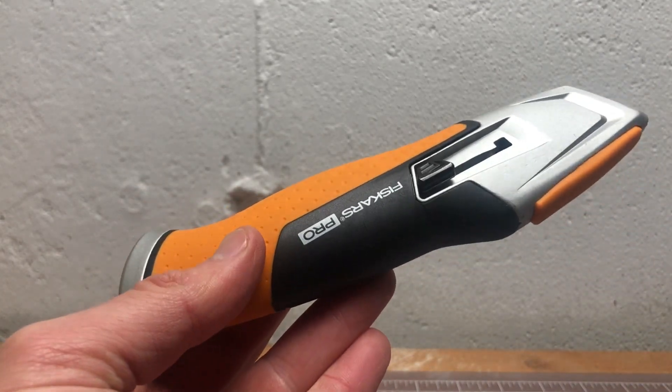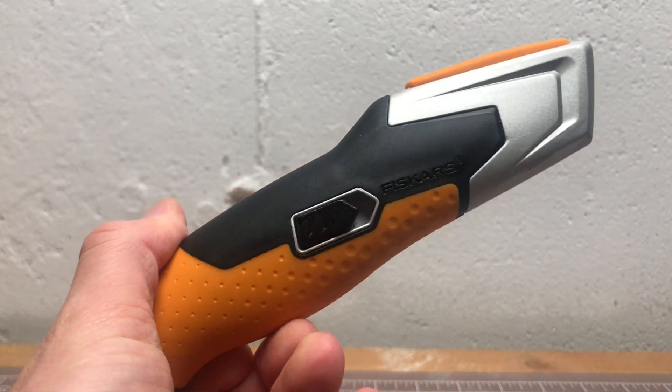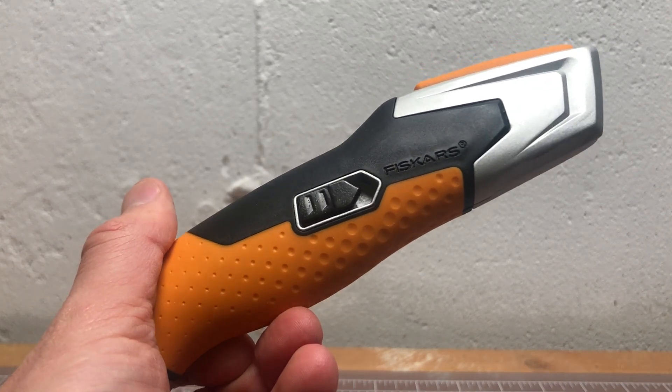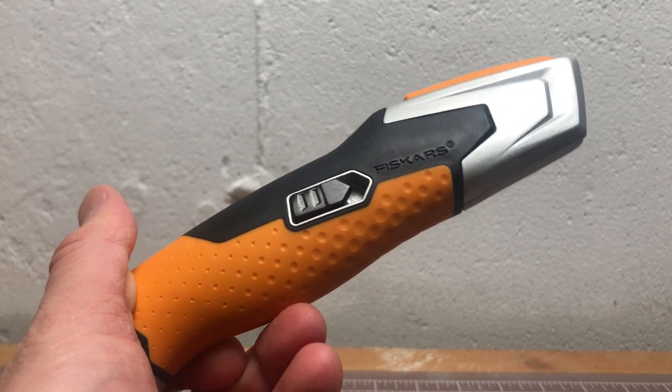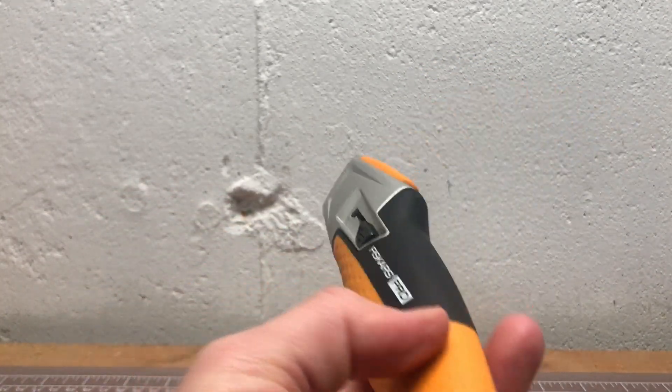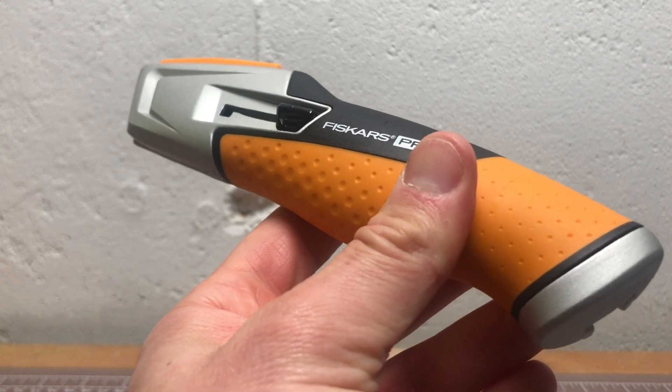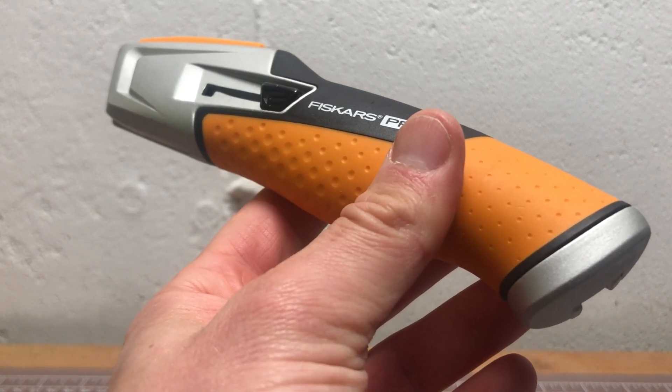But this is the type of thing you could buy once and have for a very long time. This one's held up pretty well and it looks brand new. I've had a lot of Fiskars products. I've always had good luck with them, so I wasn't hesitant to pick this one up. So yeah, that's the Fiskars Pro box cutter. I really like it. Thanks for watching.